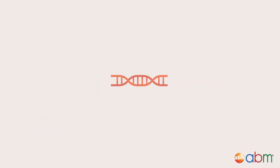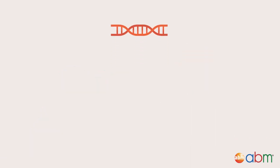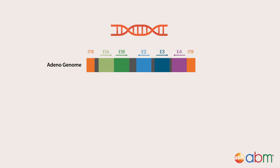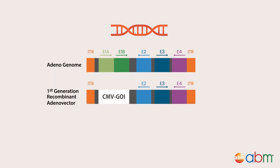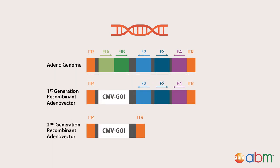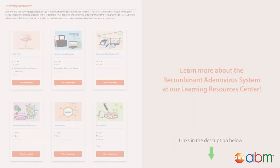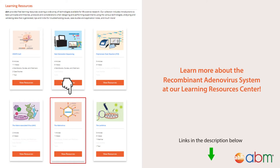Over the past 60 years, scientists have made continuous modifications to the adenovirus genome to enable it to accommodate larger transgenes and to lower its immunogenicity. The result is the popular second generation adenoviruses that we will focus on in today's video. You can learn more about the recombinant adenovirus system at our Learning Resources Center by clicking on the links in the video description.